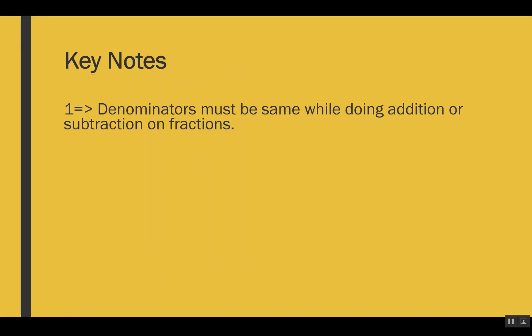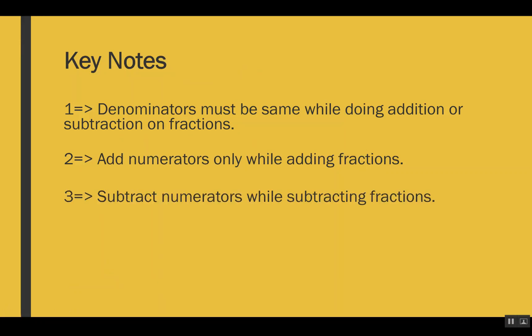These were examples to explain the addition and subtraction of fractions with different denominators. Here are the key notes: Denominators must be the same when adding or subtracting fractions. If they are not the same, take the LCM and make the denominators equal. Add numerators only when adding fractions — do not change the denominator. Subtract numerators when subtracting fractions, and simplify the result if required.